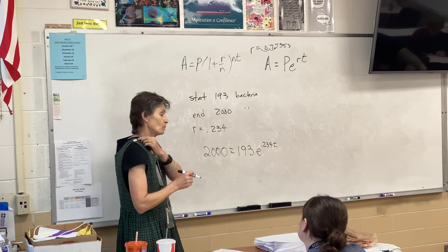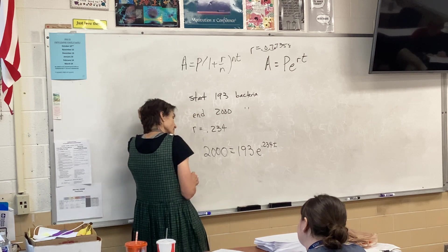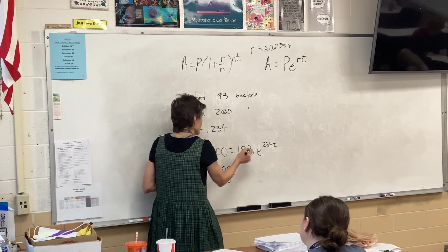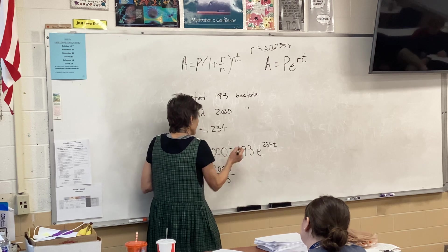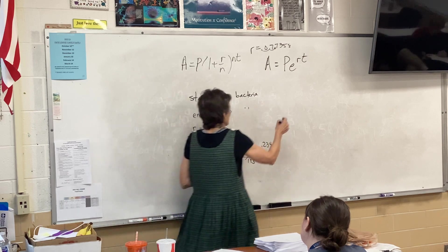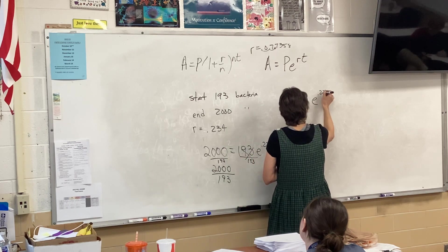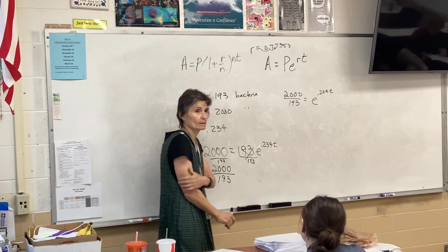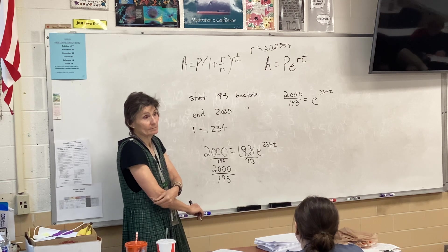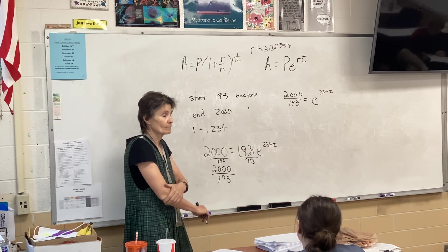I know I'm ending with 2,000, I know I'm starting with 193, I know my growth rate is 0.234, and I want to know how long it took for that to happen. So, the minute I put that T there, I know I'm going to eventually need logarithms, but not first. What am I going to do first? Divide by... Right. So, 2,000 divided by 193. You cannot have that number in that spot. You need to get rid of that number, so we're going to divide it out of the problem. So, now I have 2,000 over 193, equal to E to the 0.234T.